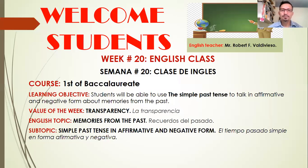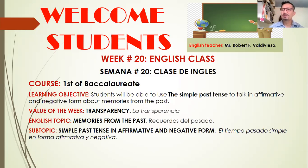The learning objective: students will be able to use the simple past tense to talk in affirmative and negative form about memories from the past. Esta clase es para primero de bachillerato y el objetivo de aprendizaje es que los estudiantes podrán usar el tiempo pasado simple para hablar en forma afirmativa y negativa de recuerdos del pasado. En la clase anterior vimos cómo cambiar los verbos regulares del presente al pasado; hoy vamos a hacer expresiones en forma afirmativa y negativa.